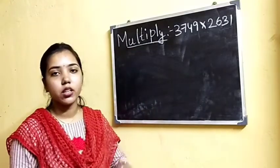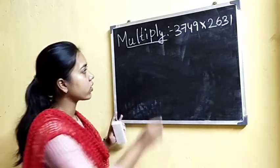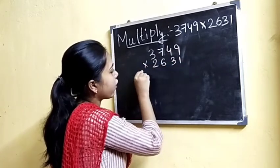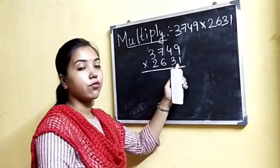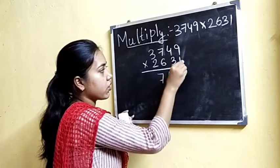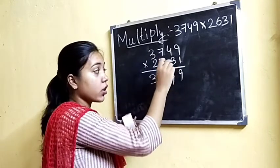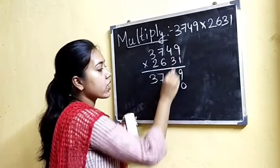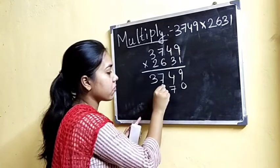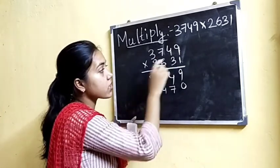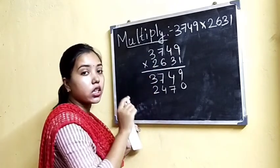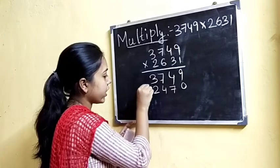Now let us solve another problem. Similarly, first we write the numbers in order. Now we will multiply, remembering to start from the ones place. Nine ones are nine, four ones are four, seven ones are seven, three ones are three. Now three is at tens place, so we will put a zero in the ones place. Three nines are twenty-seven — write seven, carry two. Three fours are twelve, twelve plus two is fourteen — write four, carry one. Three sevens are twenty-one, plus one is twenty-two — write two, carry two. Three threes are nine, plus two is eleven — write eleven.